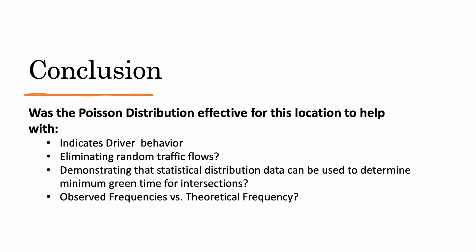In conclusion, we believe the Poisson distribution would not be effective in indicating driver behavior, due to the fact that there are too many internal and external factors that affect driver behavior. We believe it would be good at predicting random traffic flows by comparing predicted traffic flows in 20-second intervals versus the observed frequency. You could also use this to find the minimum green time for intersections, by finding the minimum number of cars coming through a 20-second period and using that as a basis for minimum green time.